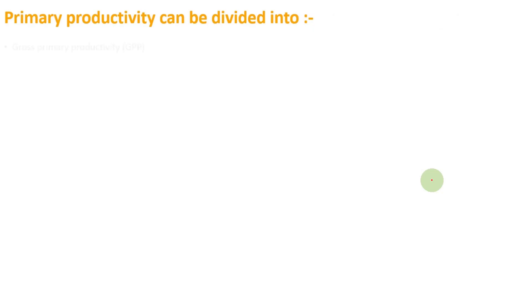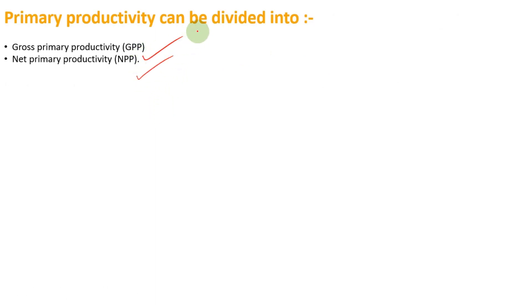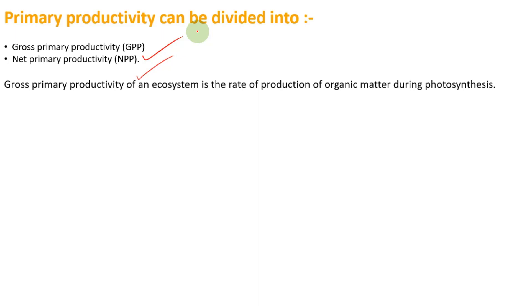Now, primary productivity can be divided further. Primary productivity bhi subdivided hai - gross primary productivity mein, jise hum GPP bolte hain, aur net primary productivity mein, jise hum NPP bolte hain. Gross primary productivity and net primary productivity dono bahut important hain. Gross primary productivity of an ecosystem is the rate of production of organic matter during photosynthesis. Jo bhi plant ne organic matter produce kiya photosynthesis ke time pe - use hi hum bolte hain gross primary productivity.